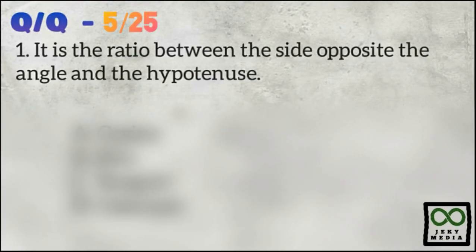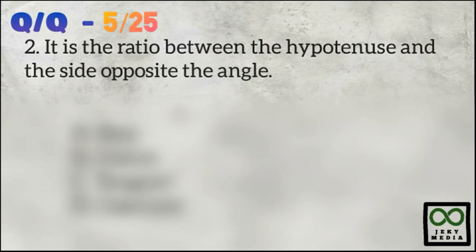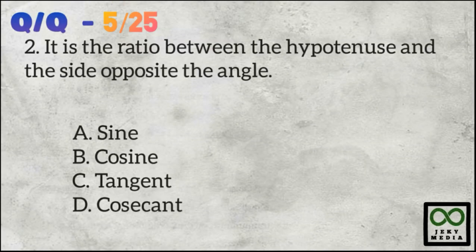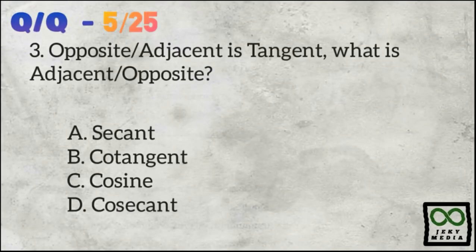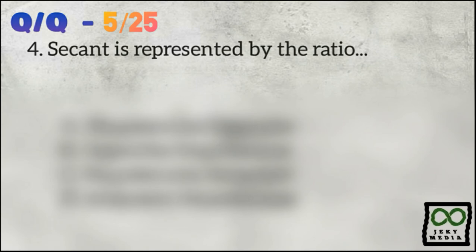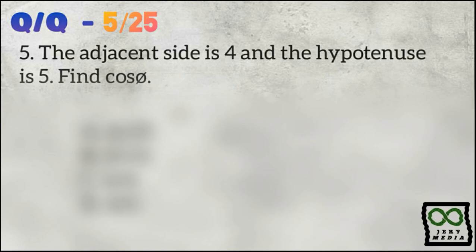Number 1: It is the ratio between the side opposite the angle and the hypotenuse. Number 2: It is the ratio between the hypotenuse and the side opposite the angle. Number 3: Opposite over adjacent is tangent — what is adjacent over opposite? Number 4: Secant is represented by the ratio — what is it? Number 5: The adjacent side is 4 and the hypotenuse is 5 — find cosine theta.